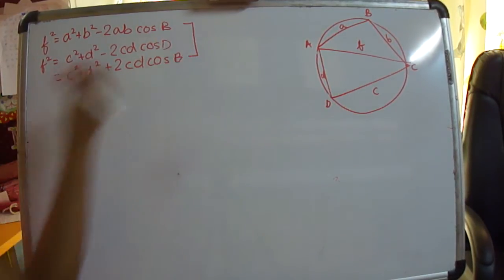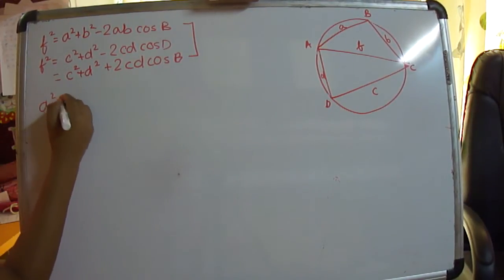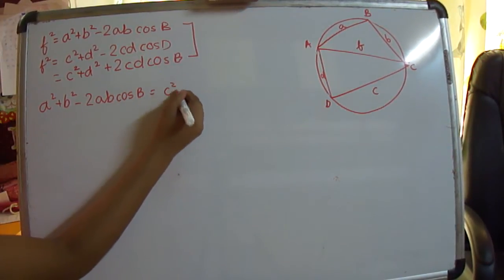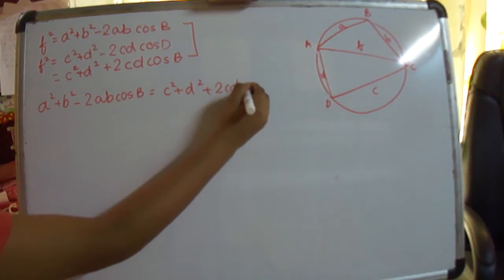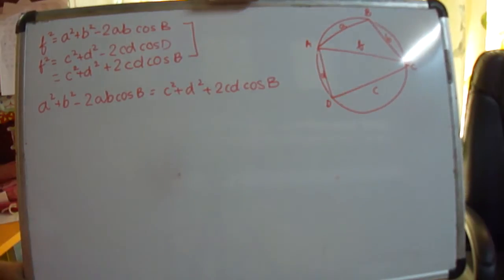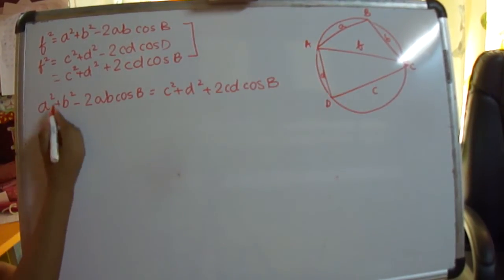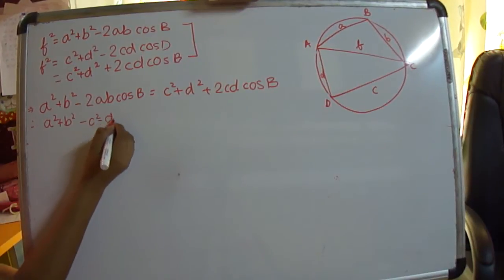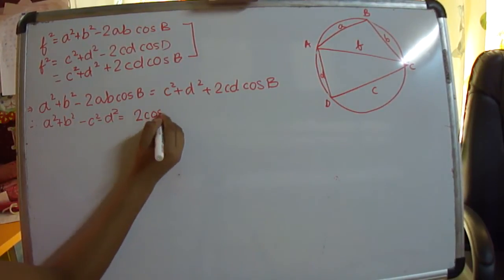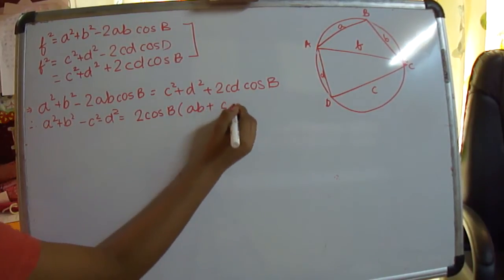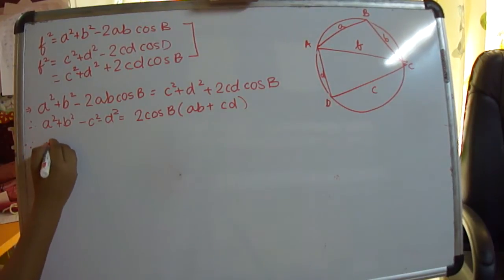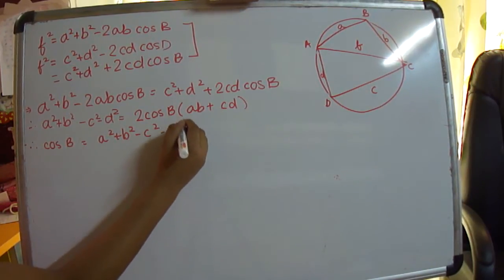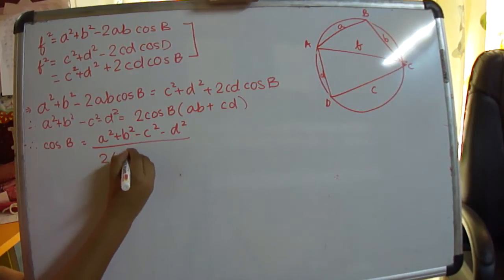We get that A² plus B² minus 2AB·cos B equals C² plus D² plus 2CD·cos B. Rearranging, A² plus B² minus C² minus D² equals 2·cos B·(AB plus CD). Therefore, cos B equals (A² plus B² minus C² minus D²) divided by 2(AB plus CD).